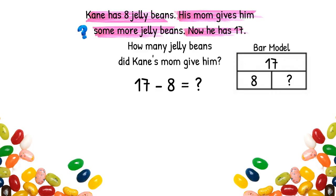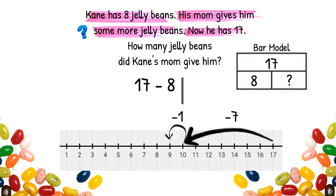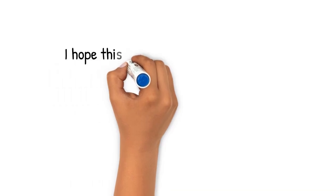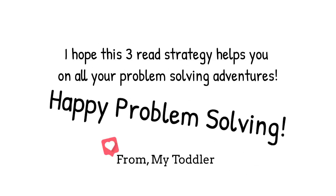Next you're going to choose what strategy you're going to use to solve the equation. Since the numbers are so low, I'm going to choose a number line to solve my equation. I'm going to start at 17 and jump backwards to 10 to make a nice clean 10 — I have to subtract 7 to get to 10. If I subtract 7, how many more do I need to subtract to subtract a total of 8? One. Right. So 10 minus 1 equals 9, and now we know that 17 minus 8 equals 9. I hope this 3-read strategy helps you on all your problem solving adventures. Happy problem solving!